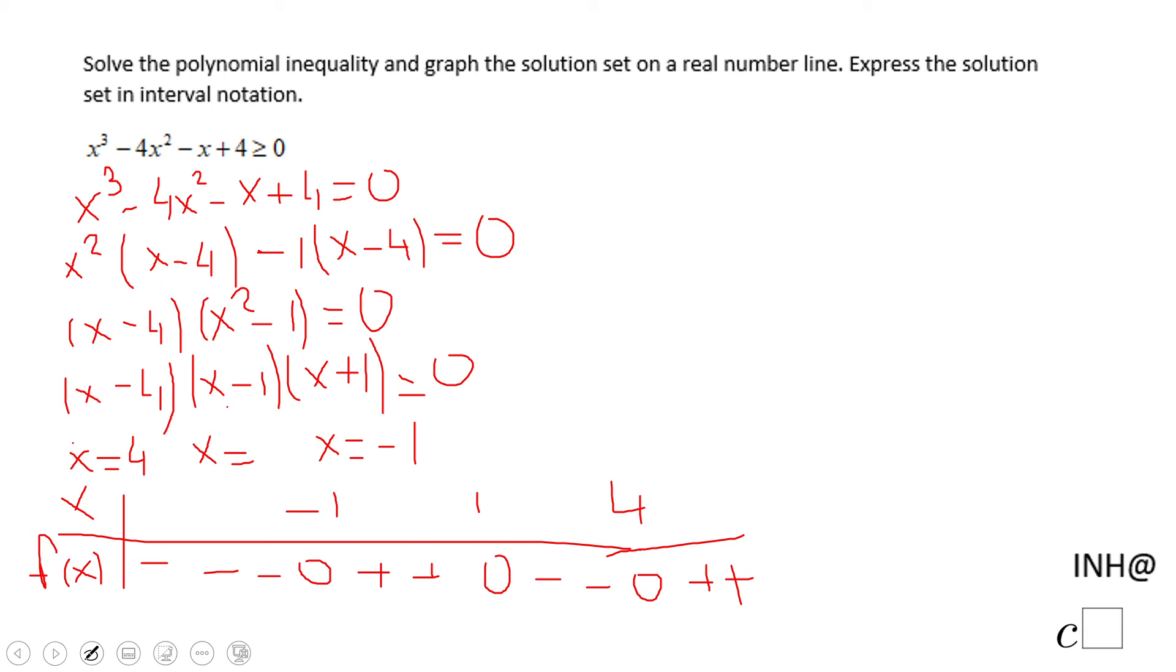Now we can answer our problem. We are asked when this polynomial is greater or equal to zero, that will be here and here. So that will be [-1, 1] (this closed interval with brackets) and then [4, ∞). Be sure you put the parentheses to infinity and use the union sign.